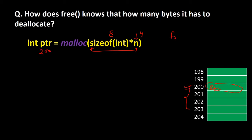When we write free(ptr), the syntax of free takes only ptr as the argument — it has the address 200. How does free know it has to deallocate 4 chunks, 5 chunks, or 6 chunks starting from address 200? It does not have any information about n. So the problem is: free does not have the information of n, and how many bytes it has to deallocate starting from ptr.